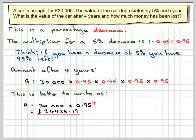Now, how much money has been lost? Well, the amount of money that's been lost is the original amount of money, which is £30,000, minus our answer here. And that will give me £5,564.81.